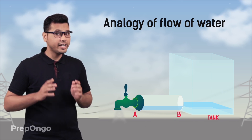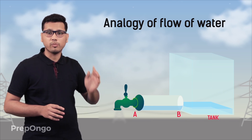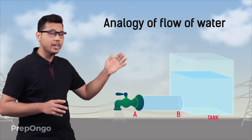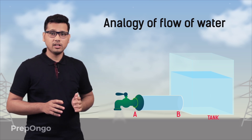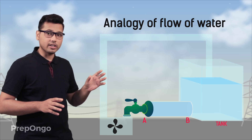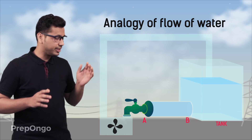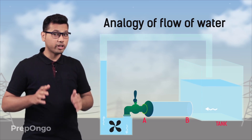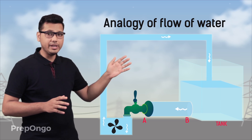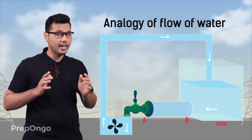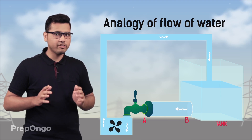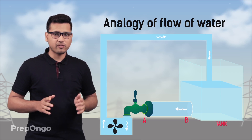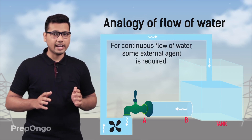Now what if we want a continuous flow of water from point B to point A? To ensure this, we have to maintain the water level difference between B and A. So if I attach a motor at point A which collects the water from the tap and pumps it back to the water tank, then this water level difference or pressure difference between B and A will be maintained, and hence there will be a continuous flow of water from B to A. So we need to attach some external agency for continuous flow.